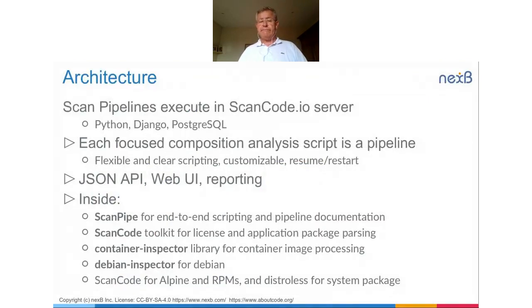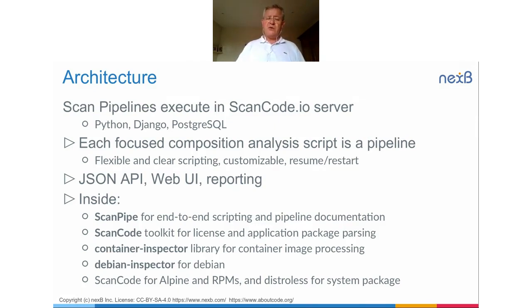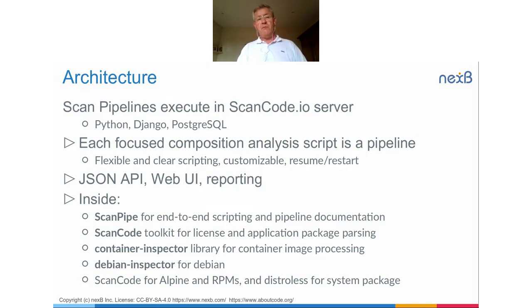We have a JSON API, web UI reporting — we looked at some of that. Behind the scenes we use many libraries: ScanCode Toolkit, Container Inspector which introspects containers, Debian Inspectors, and so on. Everything is Apache licensed. We have support for most commonly used application and system packages including Alpine, RPMs, Debian, Rust, Go, Python, Maven, Java, JavaScript, and many more.